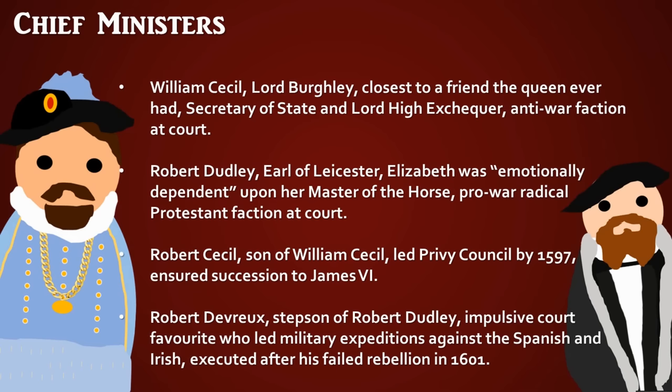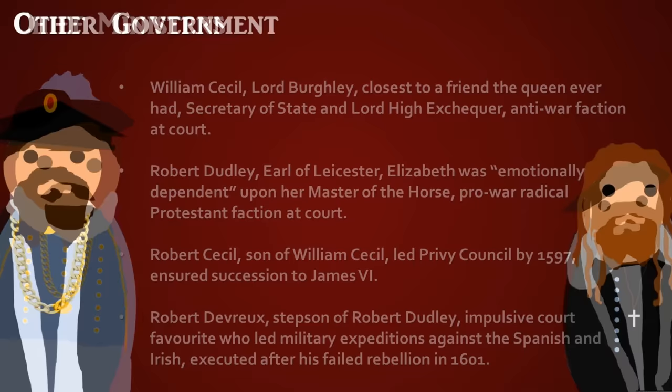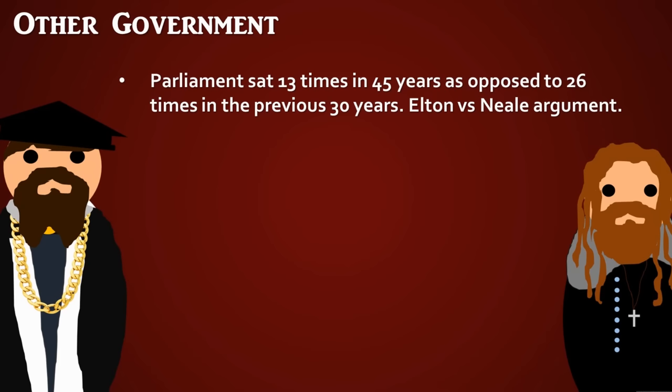Robert Devereux, the Earl of Essex, was the stepson of Robert Dudley — impulsive like his stepfather. He led several military expeditions against the Spanish and the Irish, though he signed a treaty with the Irish against the Queen's wishes. He then rebelled against the Queen and was executed in 1601. Parliament sat 13 times during Elizabeth's 45-year reign, compared to 26 times in the previous 30 years before her.